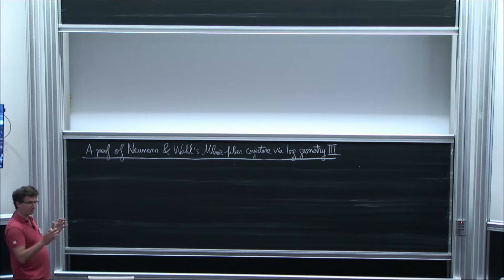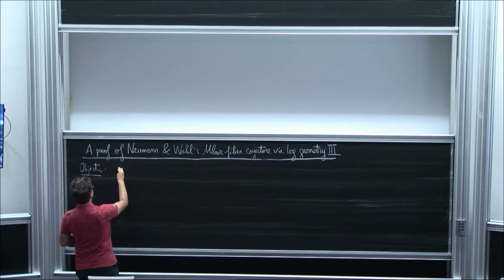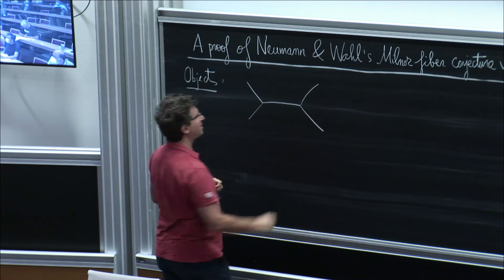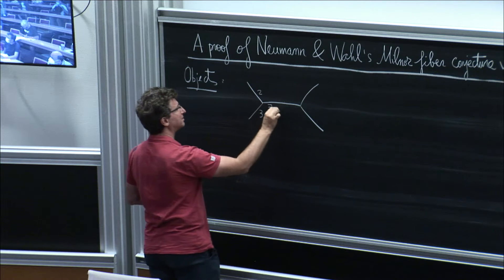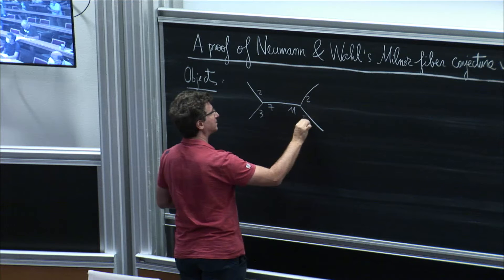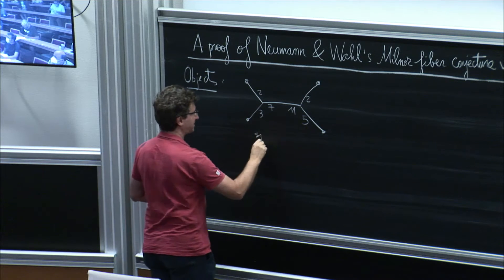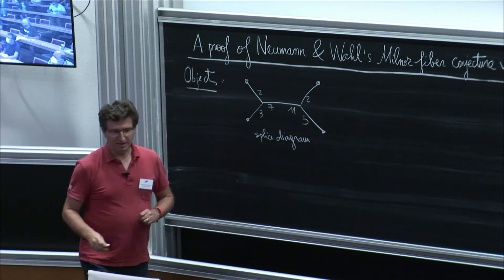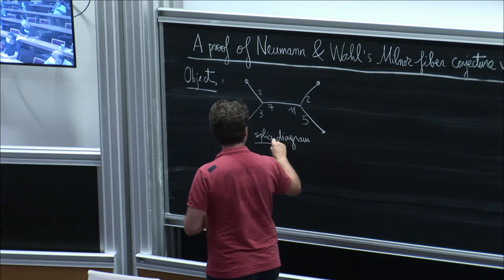Remember that the main objects of study here are splice diagrams. I gave as an example of a non-star-shaped one the following one. This is a splice diagram, and from this diagram one can build a so-called splice-type system.